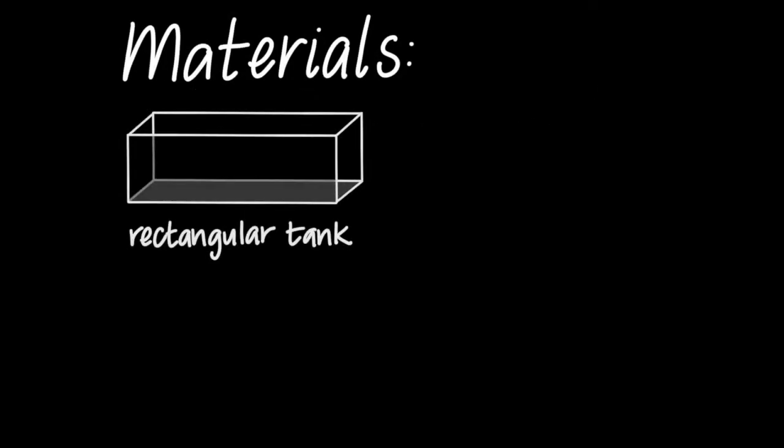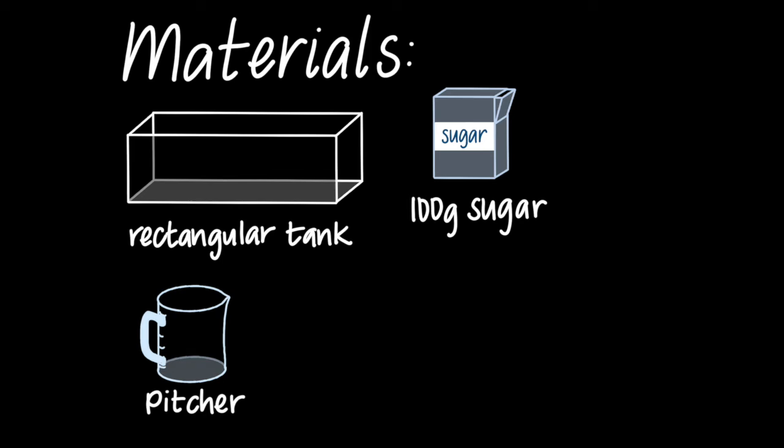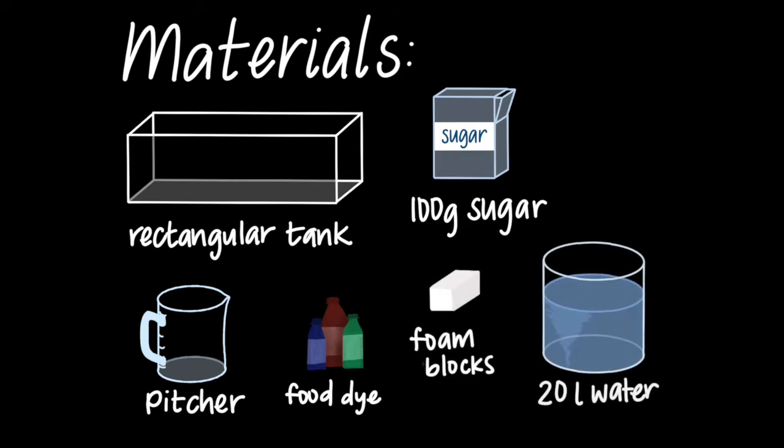For this experiment, we'll need the following materials: a 1 meter rectangular tank, about 100 grams of sugar to create a dense layer at the bottom, a pitcher of water to carefully pour in a surface layer, some food dye to show the layer interface, a couple of foam blocks to prop up the tank, 20 liters of water, and a rubber duck to visualize how waves move material across the surface.